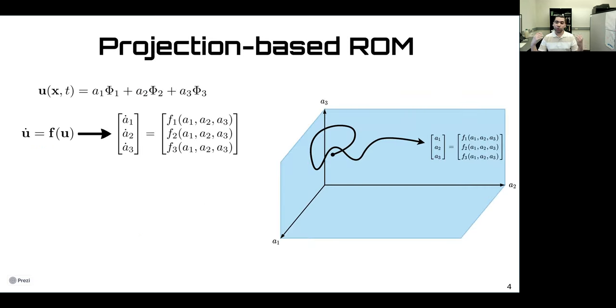To illustrate the idea, assume that the full-rank representation of the flow field u can be defined using three basis functions phi1, phi2, phi3. If we do the Galerkin projection, we get an equation for a1, a2, a3, which represents the full-order trajectory.